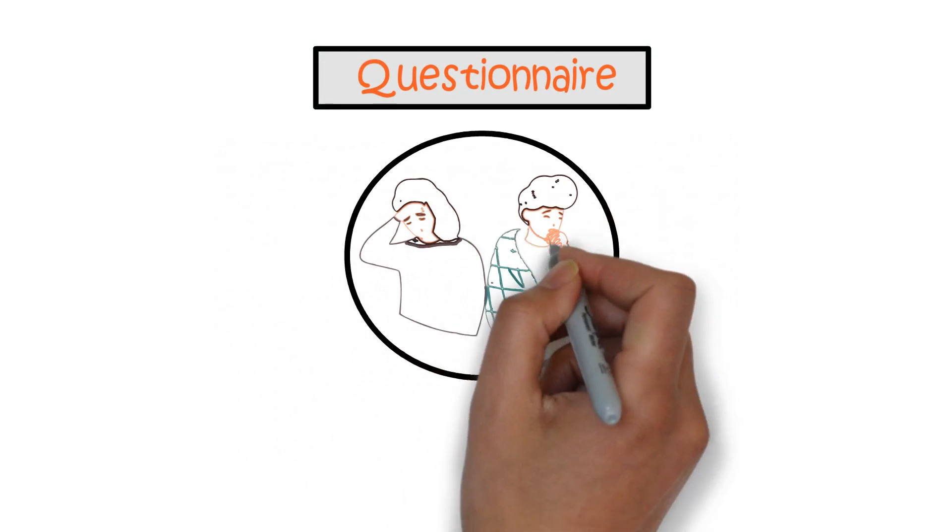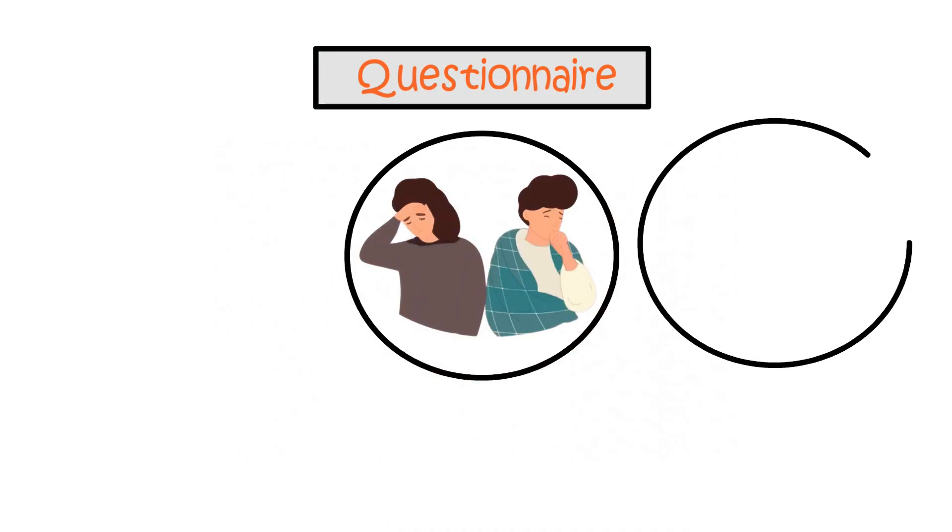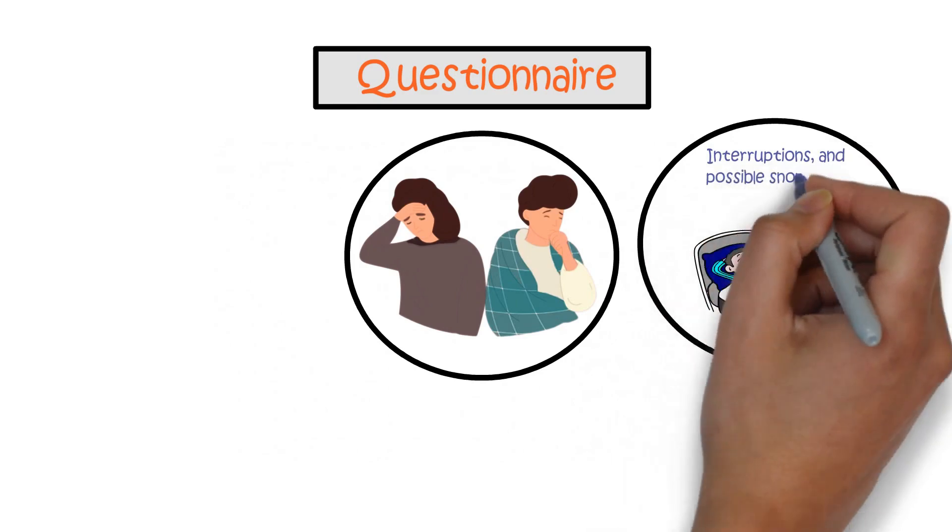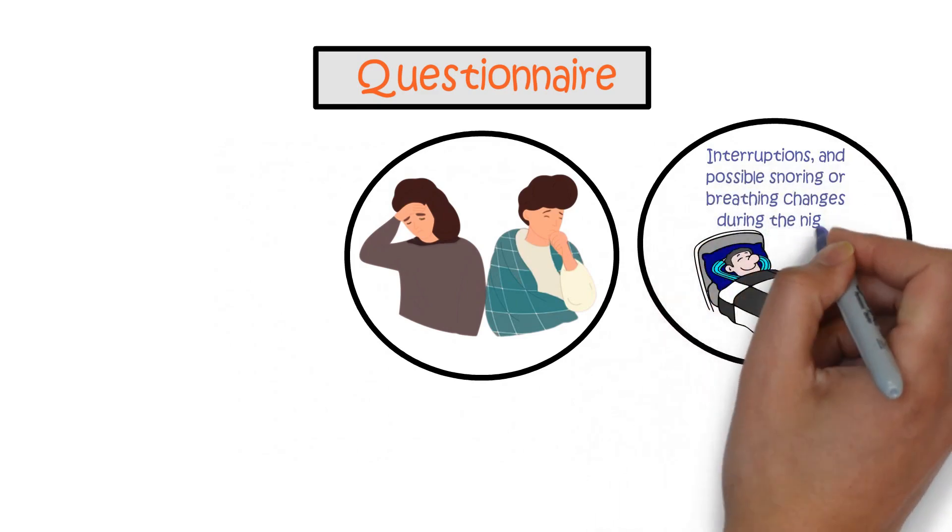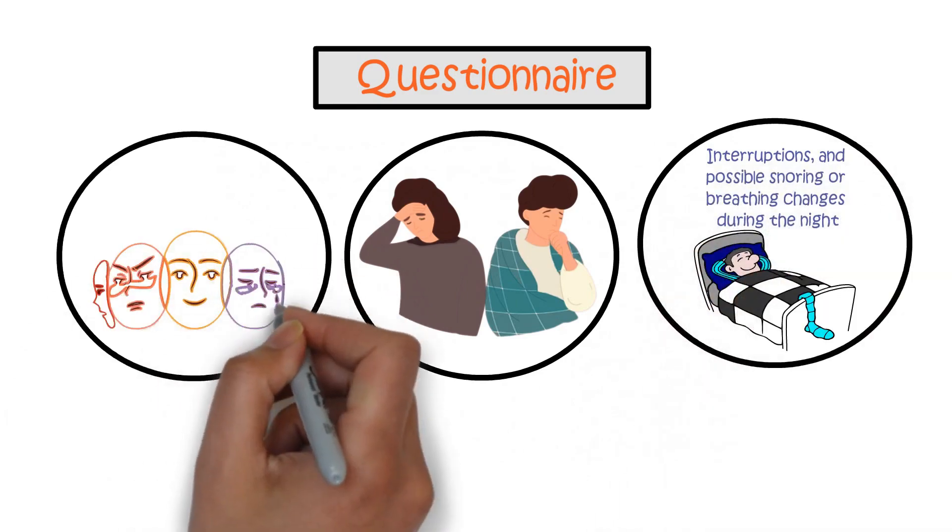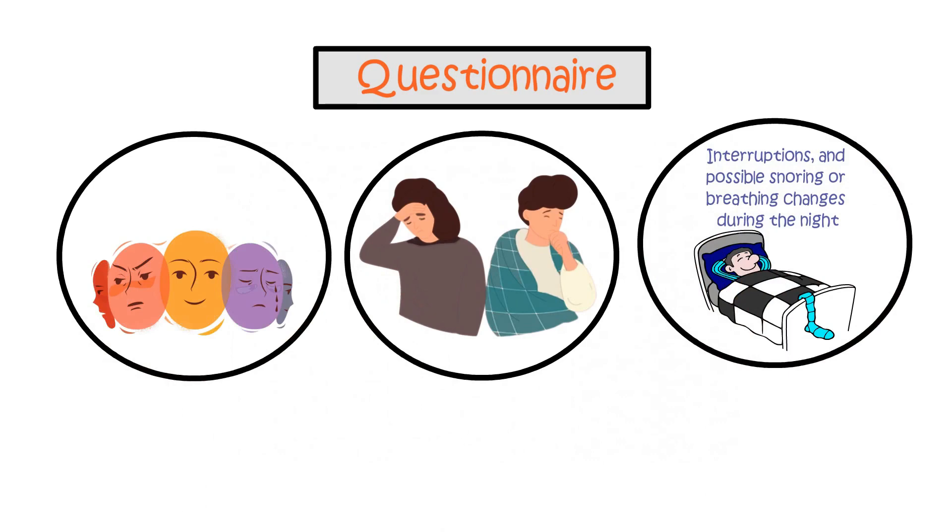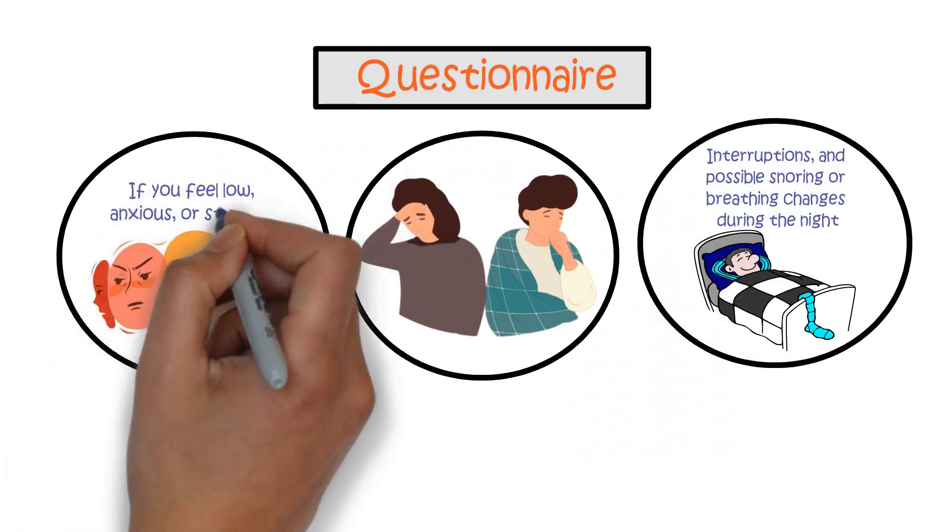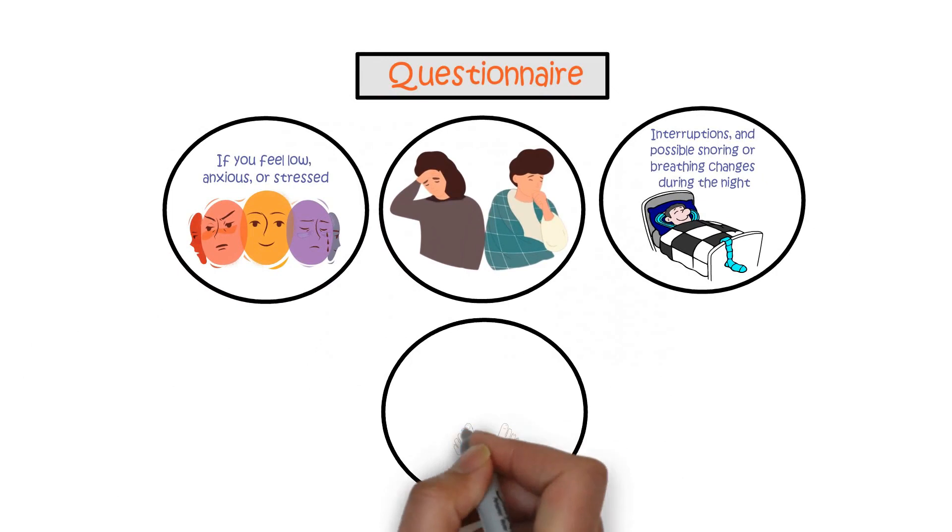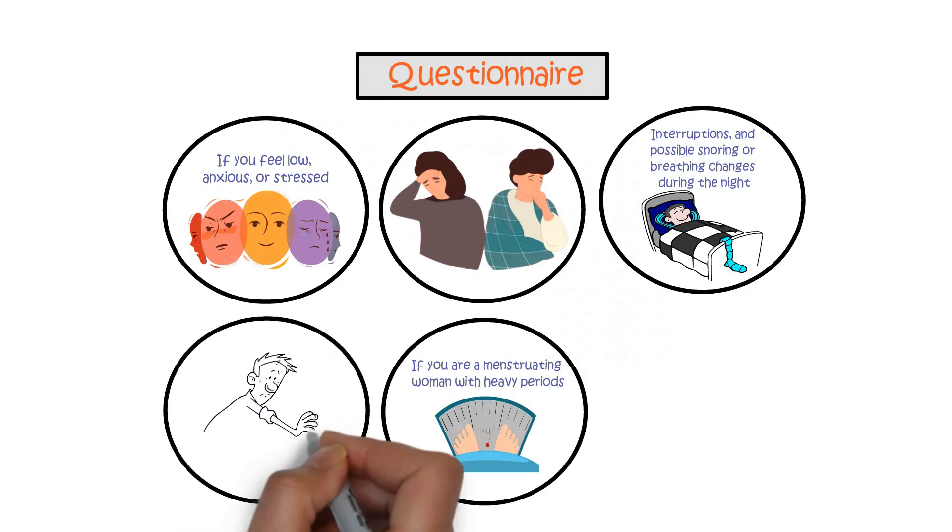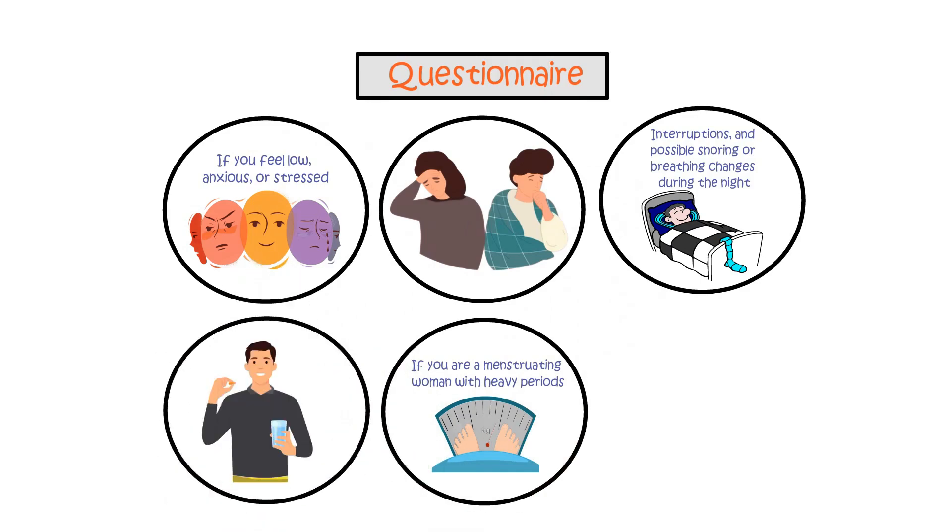Inquiring about other symptoms you may be experiencing. Assessing your sleep patterns, interruptions, and possible snoring or breathing changes during the night. Exploring your mood and emotional well-being, especially if you feel low, anxious, or stressed. Evaluating changes in weight, particularly if you are a menstruating woman with heavy periods. Assessing your alcohol consumption and medication usage.